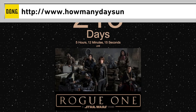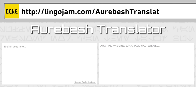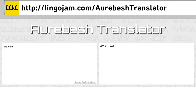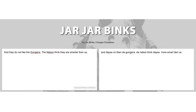And while we all count how many days until the next Star Wars film, teach yourself Aurebesh — the writings found throughout the Star Wars universe. Consisting of 26 characters, you can learn how to write and decrypt messages written in Aurebesh. And you and I both know the Gungans will not be easily swayed, so you can brush up on Jar Jar's native tongue as well.